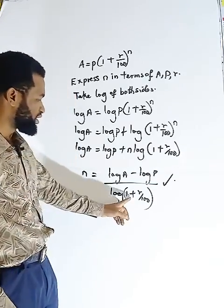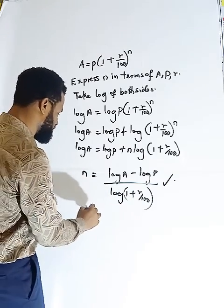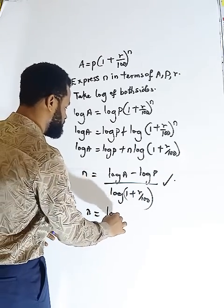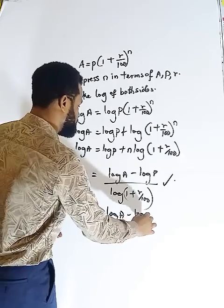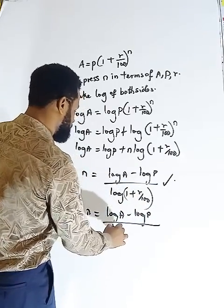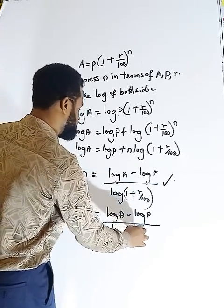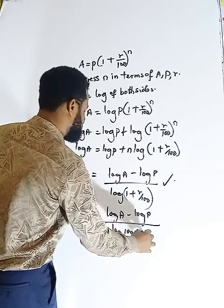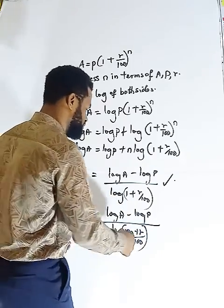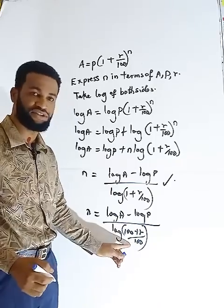However, you can still break this down. So we can go further by saying N is equal to log A minus log P all over log 100 plus R all over 100. So that is it. I can still go further by reducing this 100.